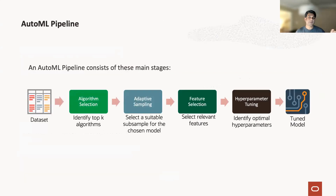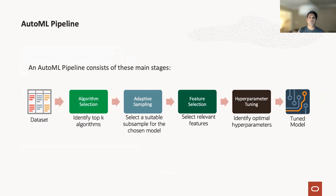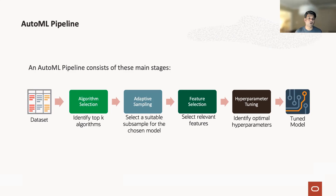The four main things in an AutoML pipeline are algorithmic selection, adaptive sampling — which is like optimizer sampling — where the AutoML pipeline scans data to see what is an optimal plan, what is the proper algorithm, what features to select in order to converge quickly to the model, and hyperparameter tuning. These are the aspects that form an AutoML pipeline.